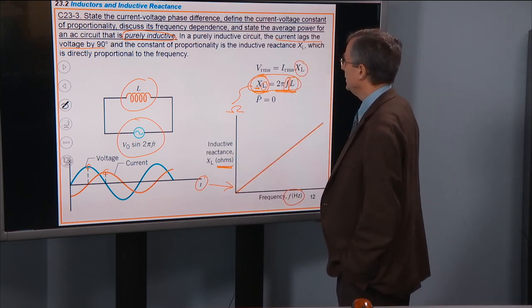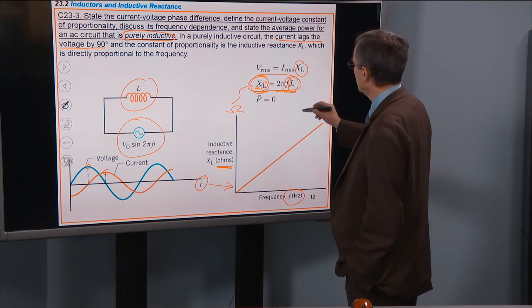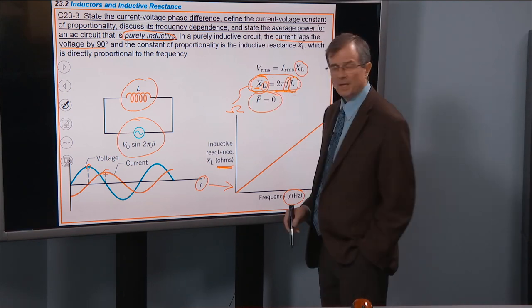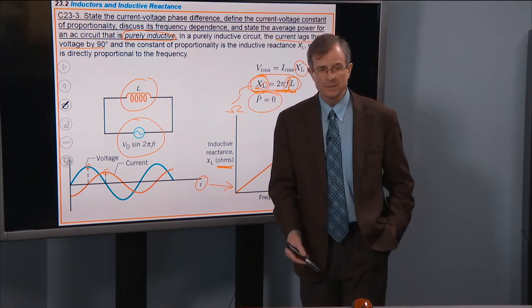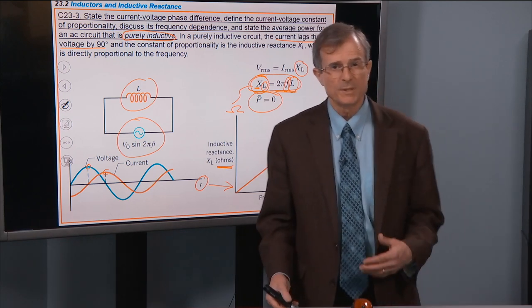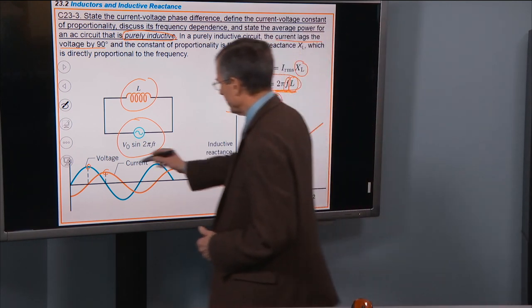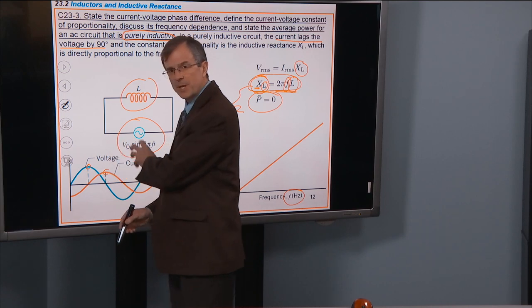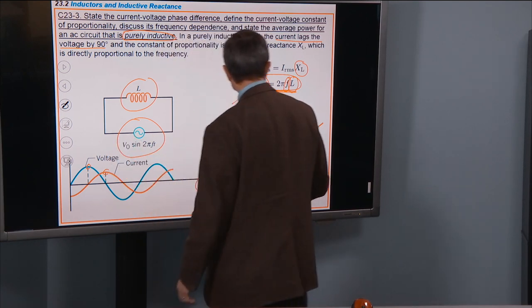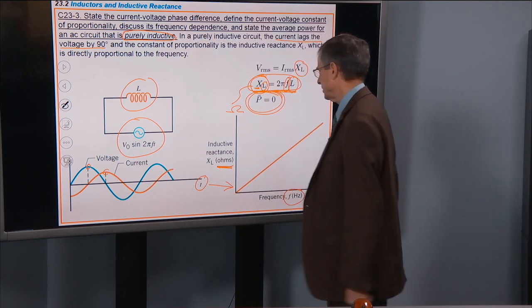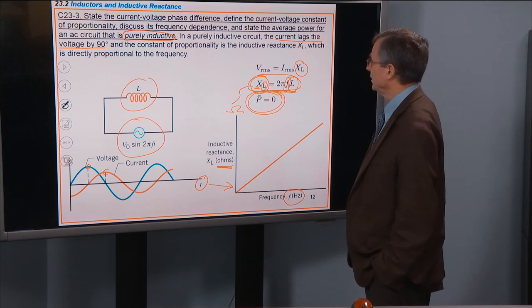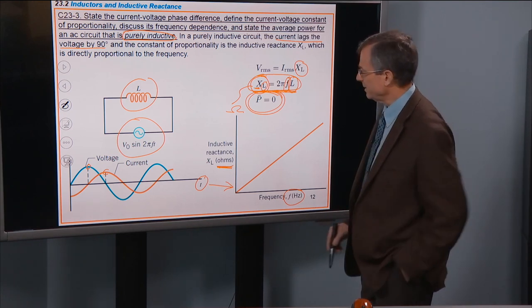So what else do we have? Purely inductive circuit, the average power is zero. And I think you can guess why the average power is going to be zero. The reason is these are out of phase, sometimes positive, sometimes negative, and they'll cancel each other out. So the average power for that circuit is going to be zero.